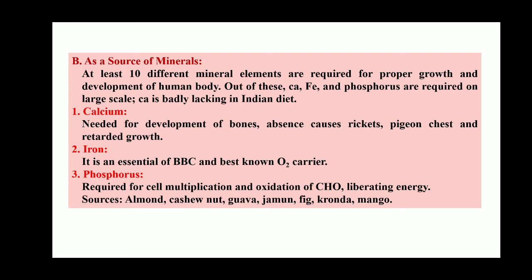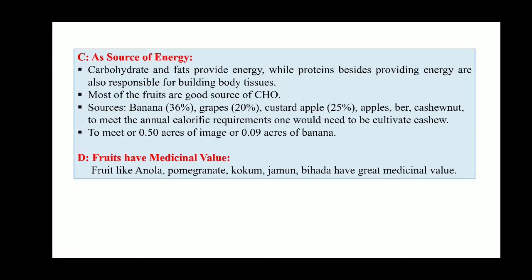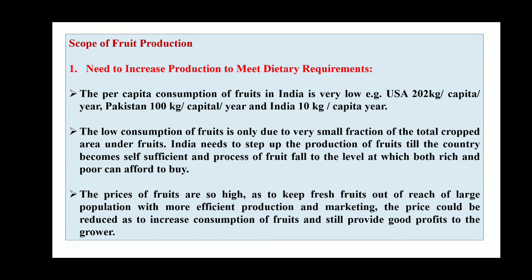Fruits are also a source of minerals like calcium, iron, and phosphorus. As a source of energy, carbohydrates and fats provide energy, while proteins are responsible for building body tissues. Most fruits are good sources of carbon, hydrogen, and oxygen. Energy sources include banana at 36 percent, grapes at 20 percent, custard apple at 25 percent, apple, ber, and cashew nut.